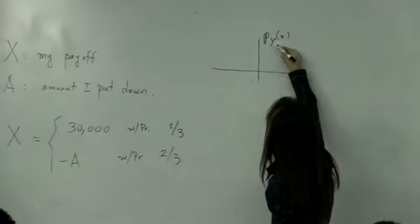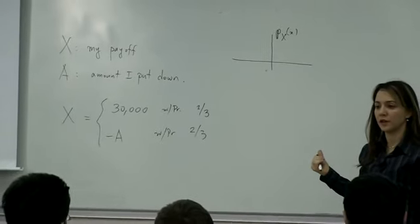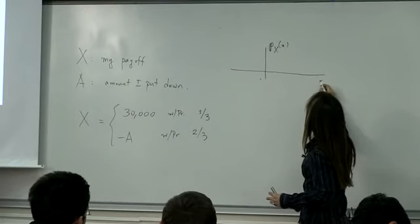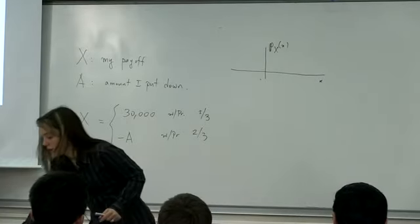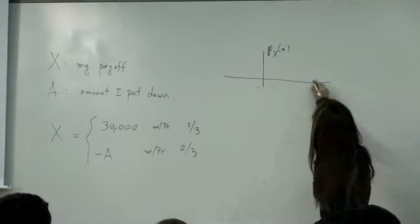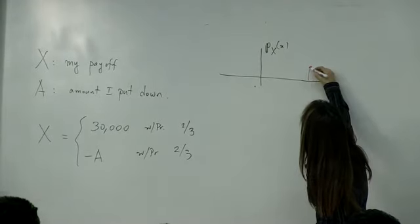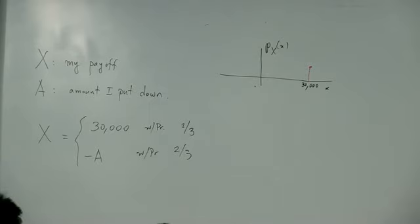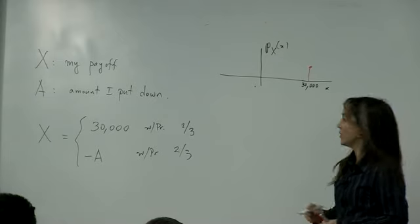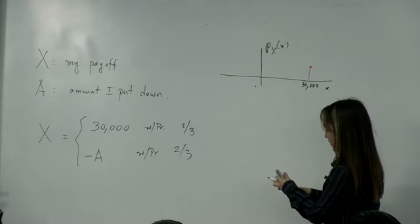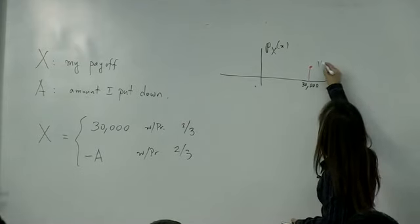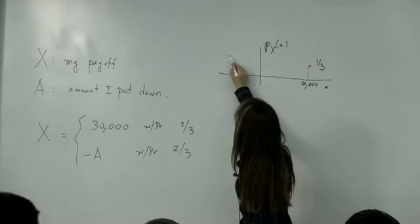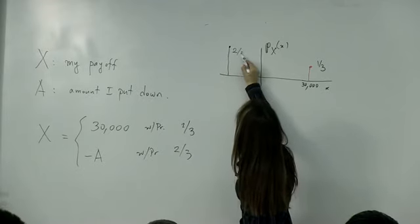So Kurchat, how many probability masses are there on the PMF plot of x? Two probability masses. Where are they? One of them is at 30,000. So what is the value of the probability mass here? One third. So there's a probability mass of 1/3 at 30,000, and there's a probability mass of 2/3 at negative a.